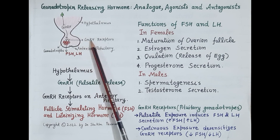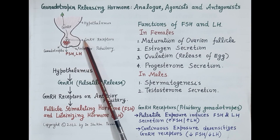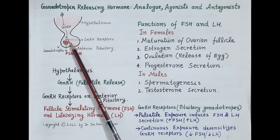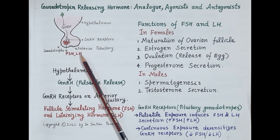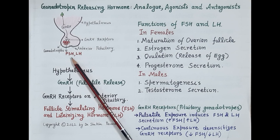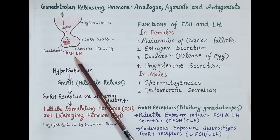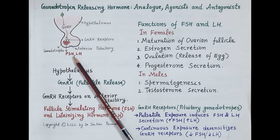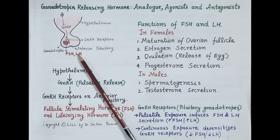GNRH binds to GNRH receptors present on the gonadotropes of the anterior pituitary. Stimulation of these receptors causes release of follicle stimulating hormone, FSH, and luteinizing hormone, LH, from the gonadotropes of the anterior pituitary. The frequency and amplitude of the GNRH pulse determines whether FSH or LH or both hormones will be released, and also determines the amount in which these hormones are to be released.